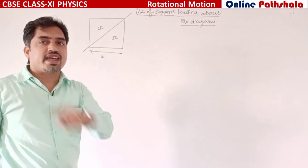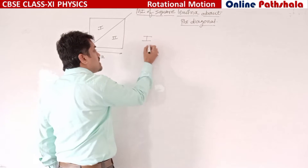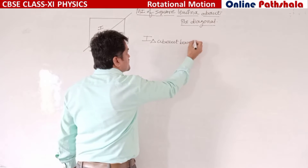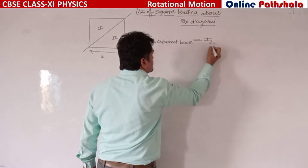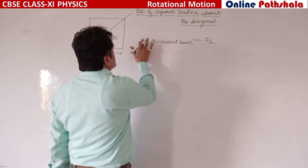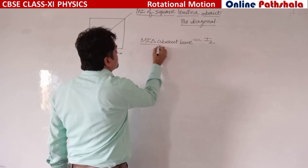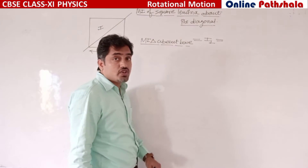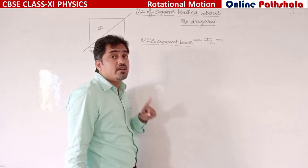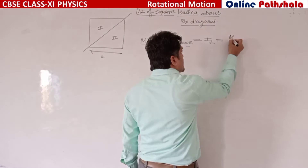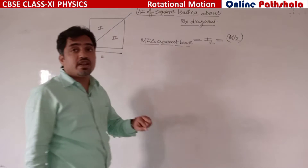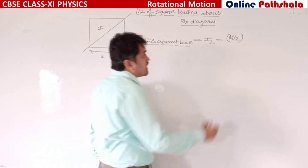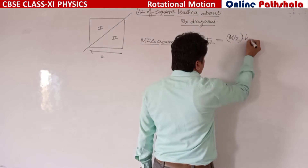Moment of inertia of the first triangle about the base — let us consider it I1. The moment of inertia of a triangle about its base is mh²/6. Since we are dividing the square lamina into two parts, the mass will be half, so it is (m/2)h²/6.